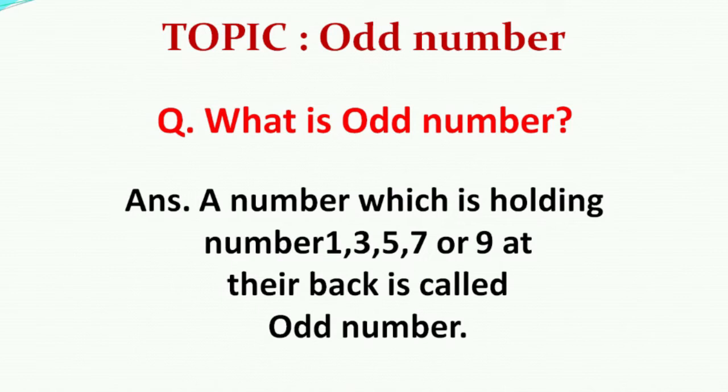So friends, an odd number means those numbers which have 1, 3, 5, 7, or 9 at the end.